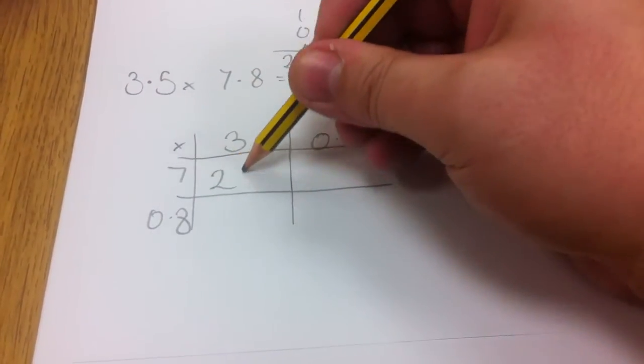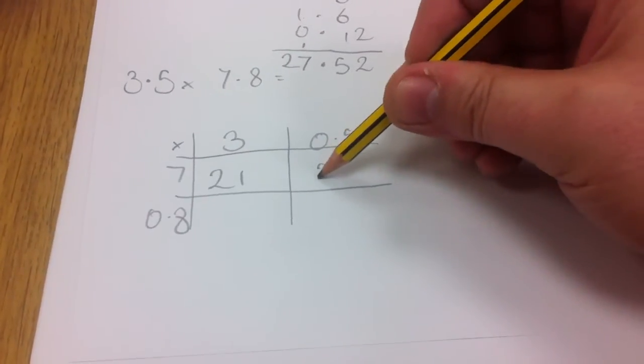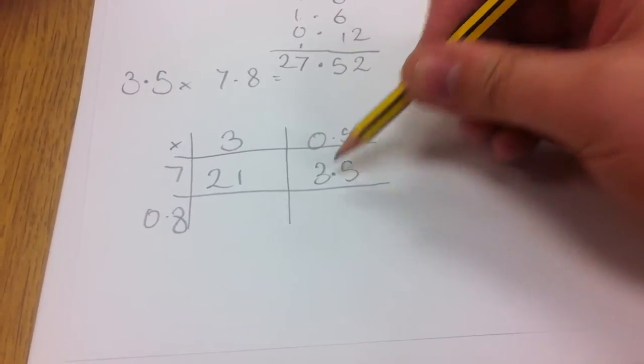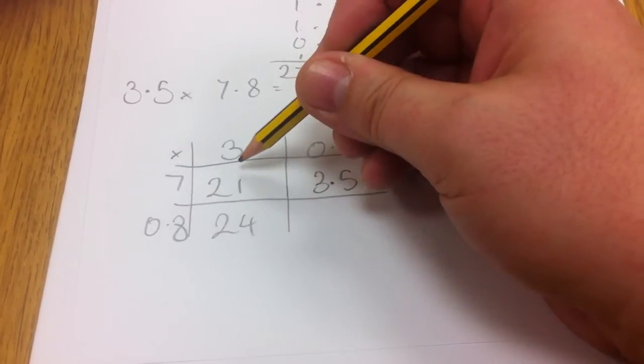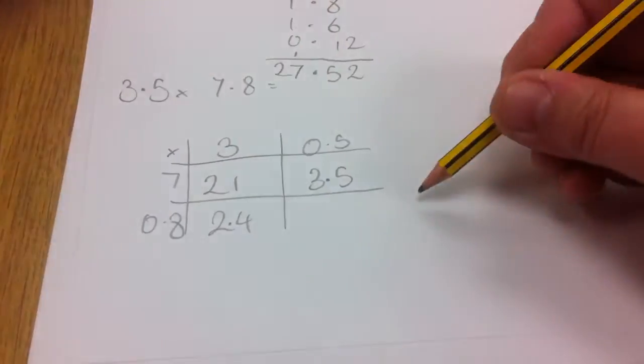7 times 3 is 21. 7 times 5 is 35. So times 0.5 is 3.5. 8 times 3 is 24. So 3 times 0.8 is 2.4.